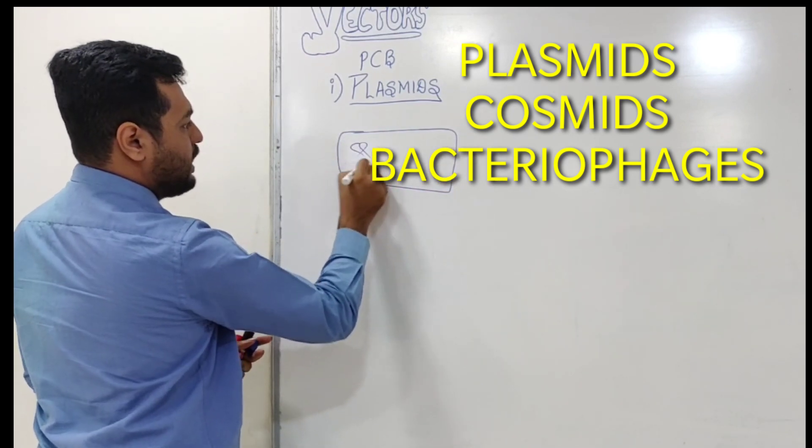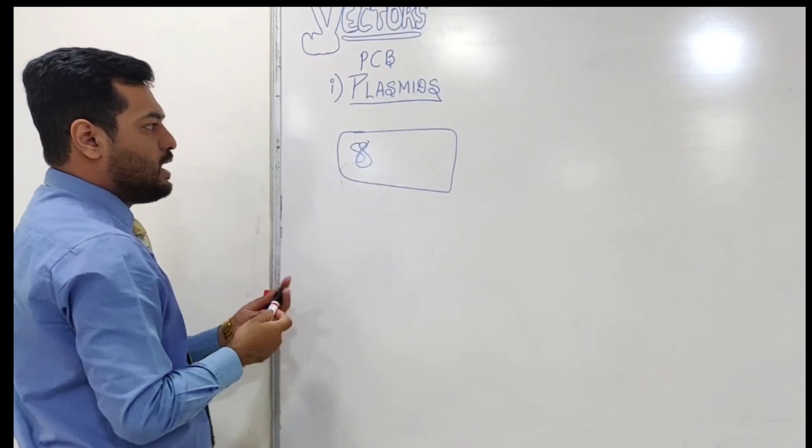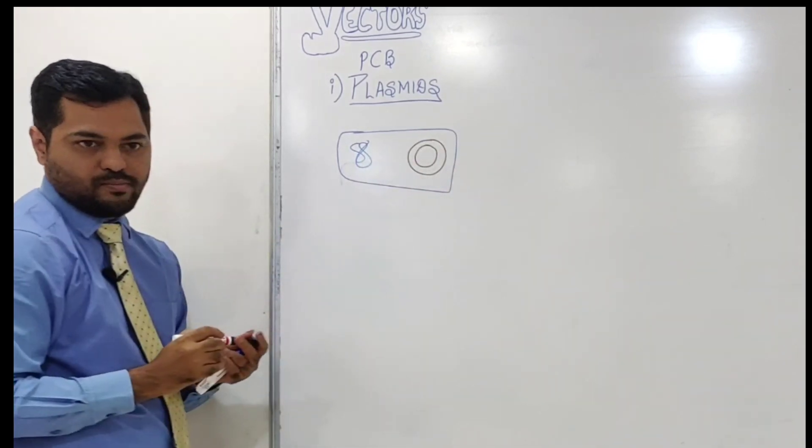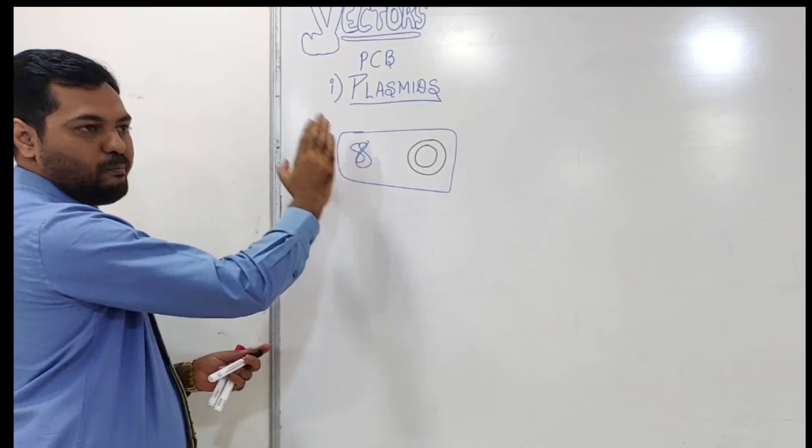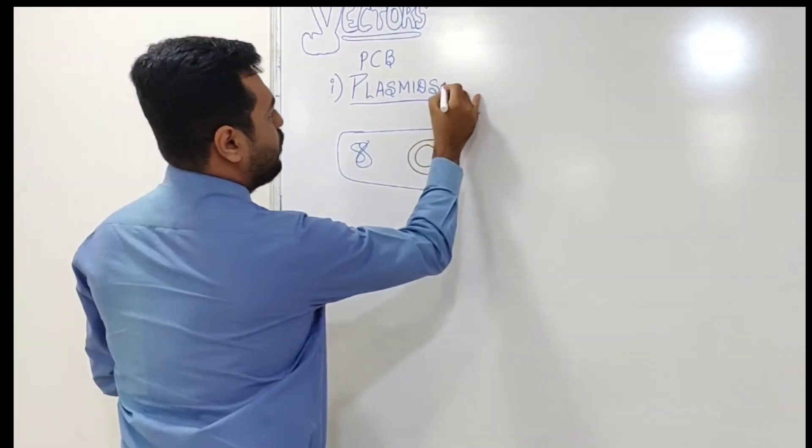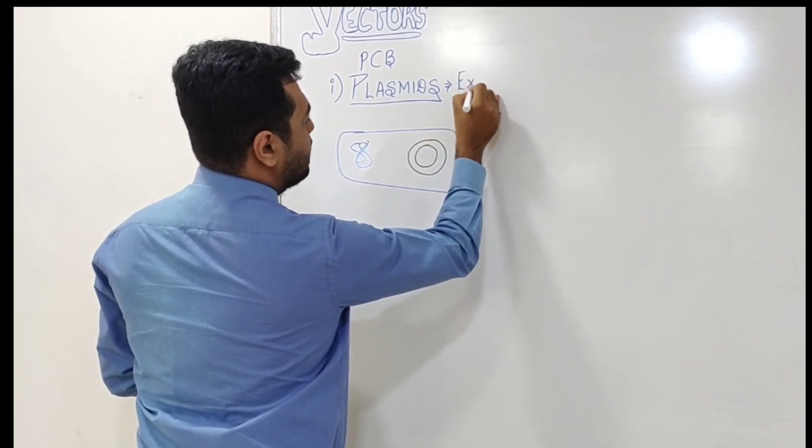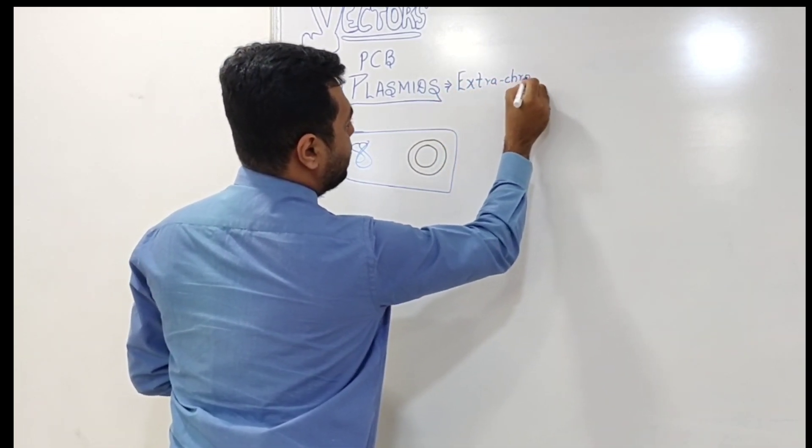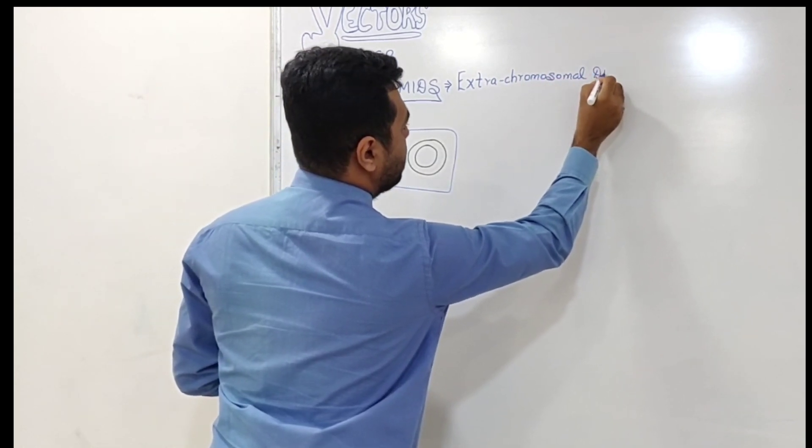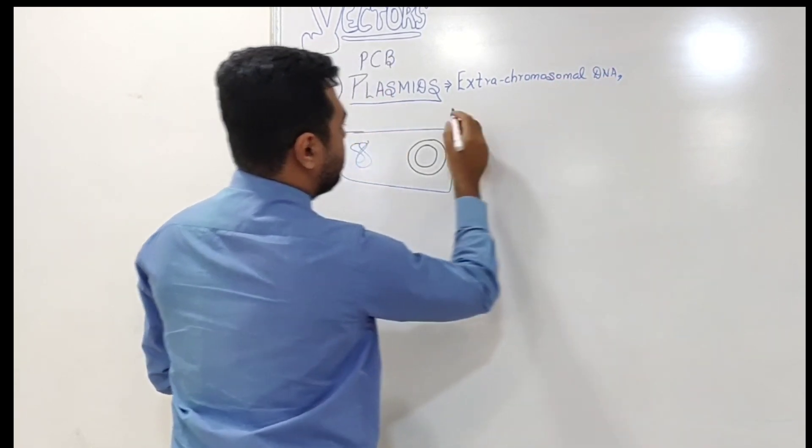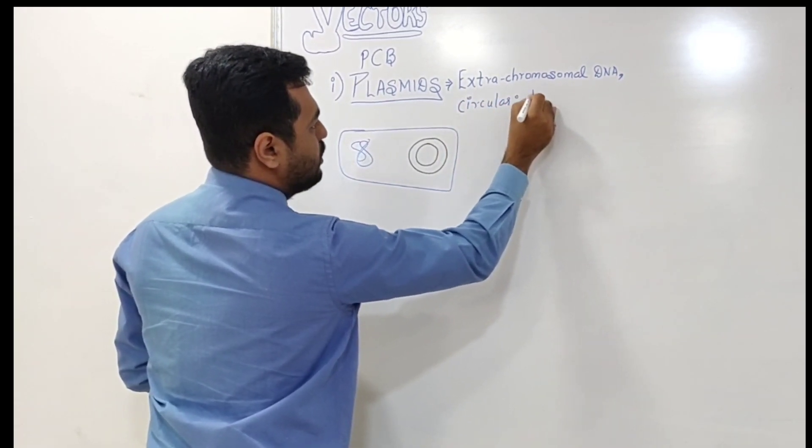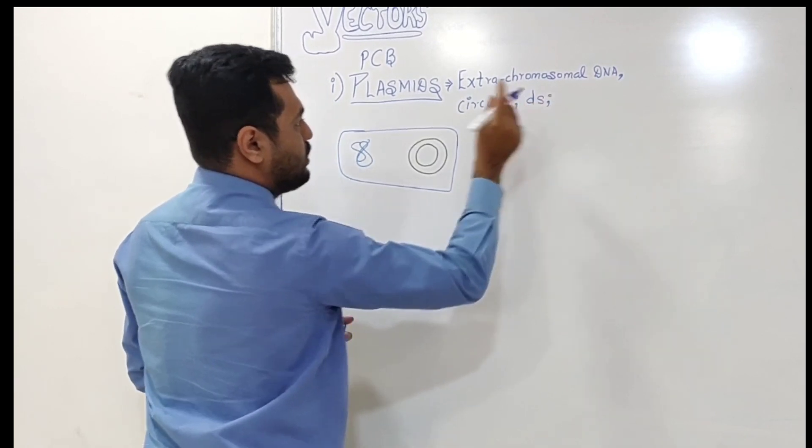Basically, bacteria or prokaryotes have one main DNA, and apart from that there is another DNA which we call plasmid. So apart from the main chromosome, this extra DNA, we call it extra-chromosomal DNA. This extra-chromosomal DNA is circular and double-stranded.